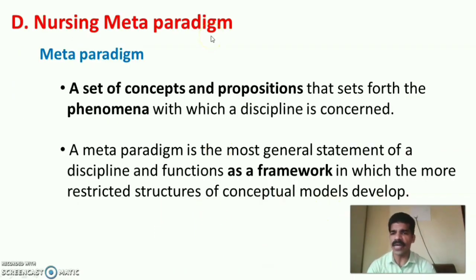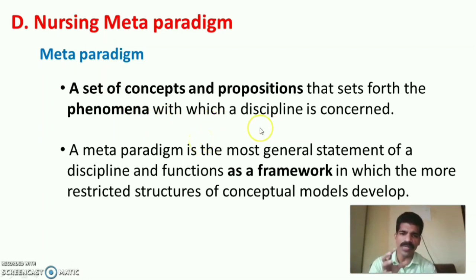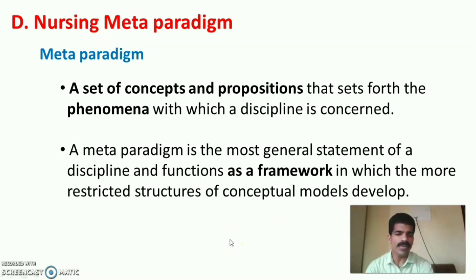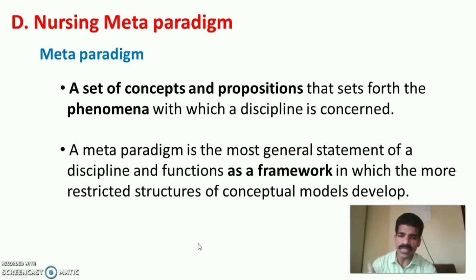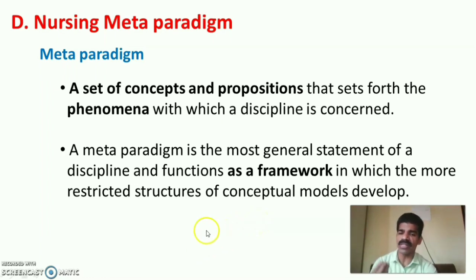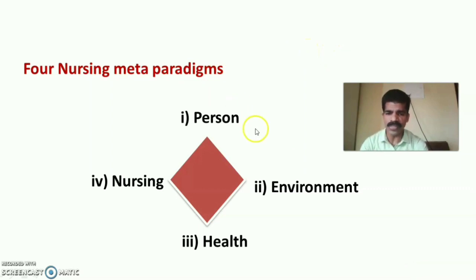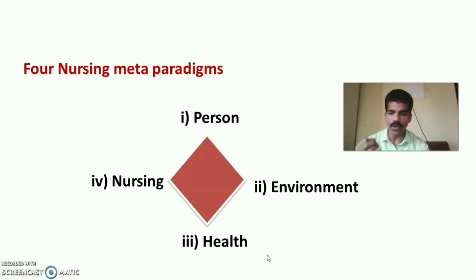The nursing meta-paradigm is a set of concepts or propositions that sets forth the phenomena with which a discipline is concerned. It is the most general statement of a discipline and functions as a conceptual framework within which more restricted structures or conceptual models can be developed. The four nursing meta-paradigms are person, environment, health, and nursing. Let us discuss these according to the Neuman System Model.